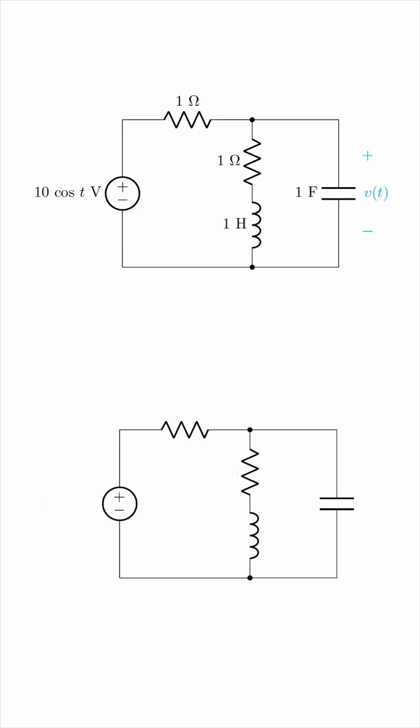The voltage source, as a phasor, is 10 phase 0 degrees. And now we have to find the impedance of each component. The impedance of a resistor is just the resistance itself, so we'll still have 1 ohm here and 1 ohm there.